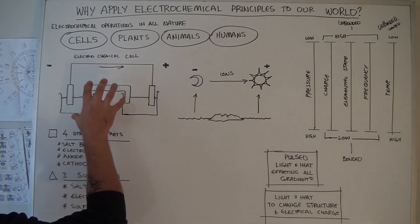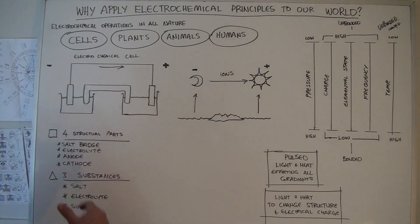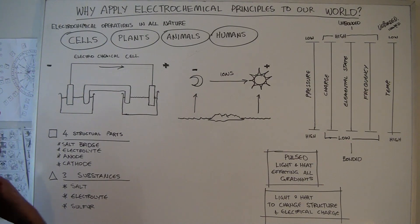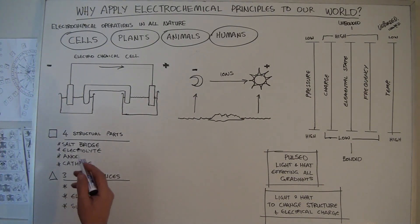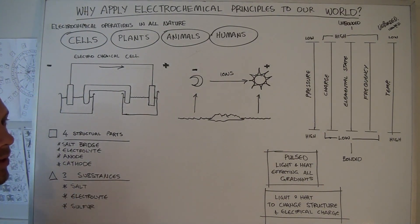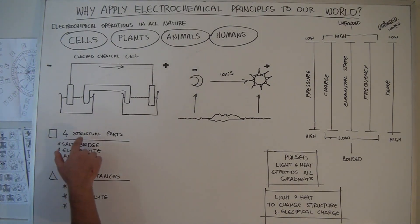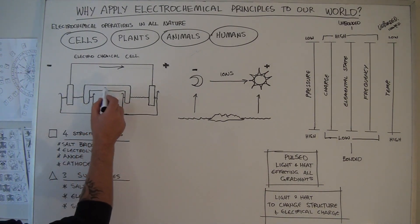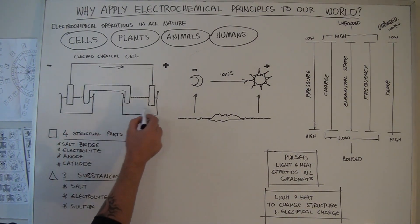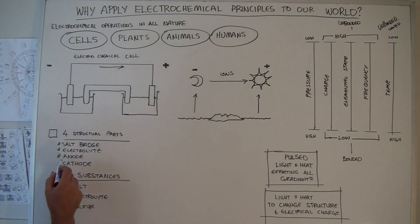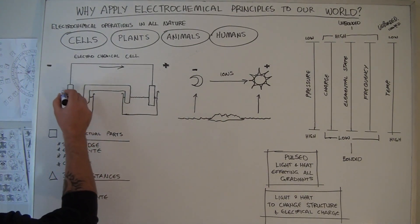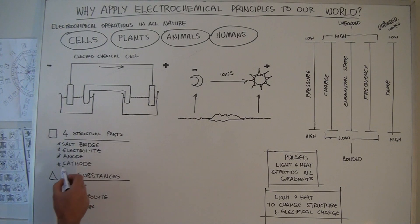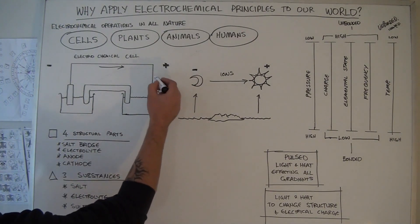This is the basic electrochemical cell, or battery, that we can look at. It is called a galvanic cell or a voltaic cell. It has four structural parts: the salt bridge in the centre, the electrolyte in each of the containers, the anode — which is the negative side — and the cathode — which is the positive side.